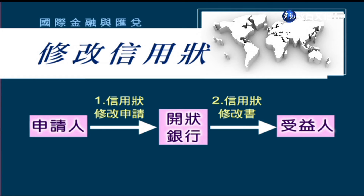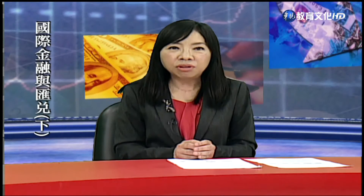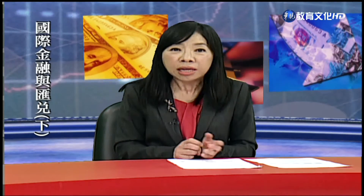對開狀銀行來說，信用狀的修改怎麼辦理呢？首先一定要由申請人填寫信用狀修改申請書，然後再由銀行審核，決定這個修改申請是否可以核准。如果可以的話，就將信用狀修改書開給受益人。另外要提到的是，對受益人來講，當他收到信用狀修改書的時候，他不一定要答應。